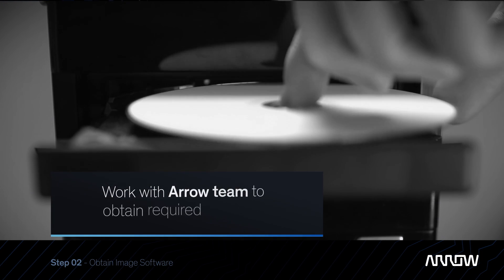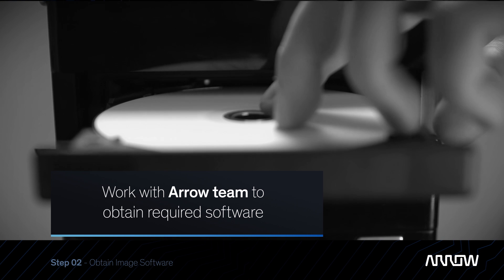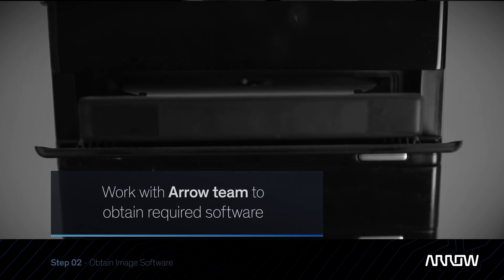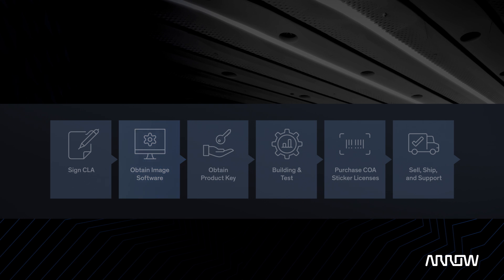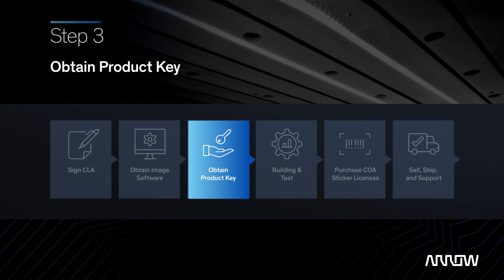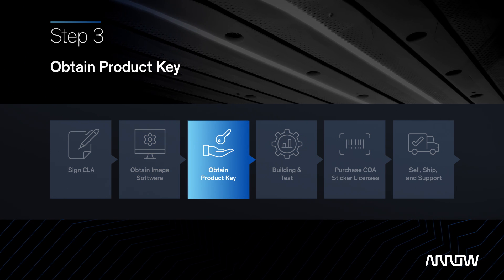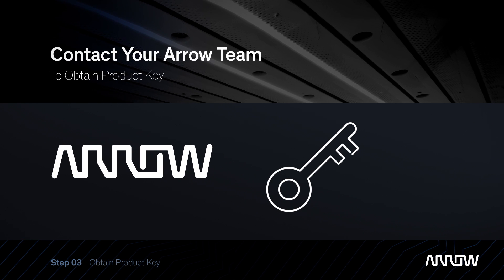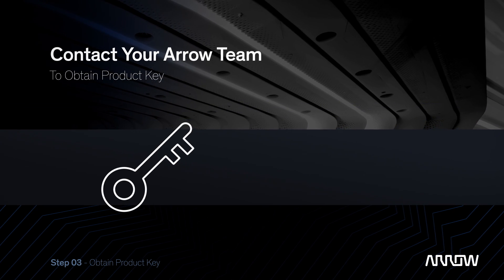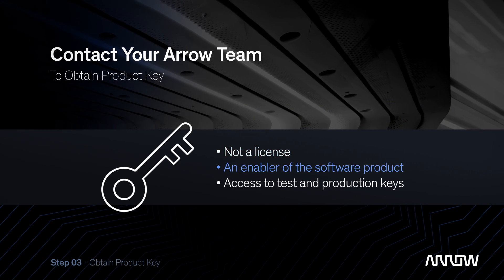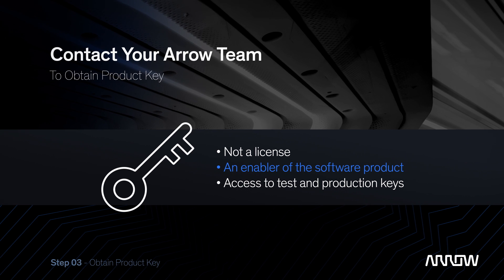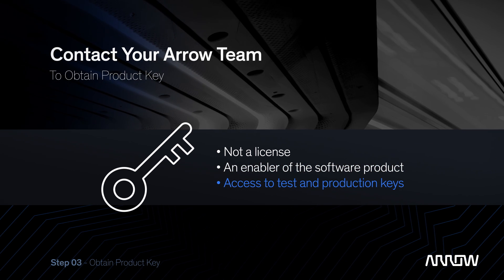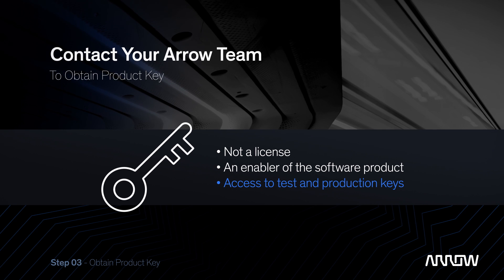In Step 2, work with the Aero team to obtain the software required to build and test your Windows product. After obtaining the software, the Aero team can assist you again with getting a product key, if your product requires one. The product key is not a license, but an enabler of the software product. Depending on the product you are purchasing, you will have access to both test and production keys.